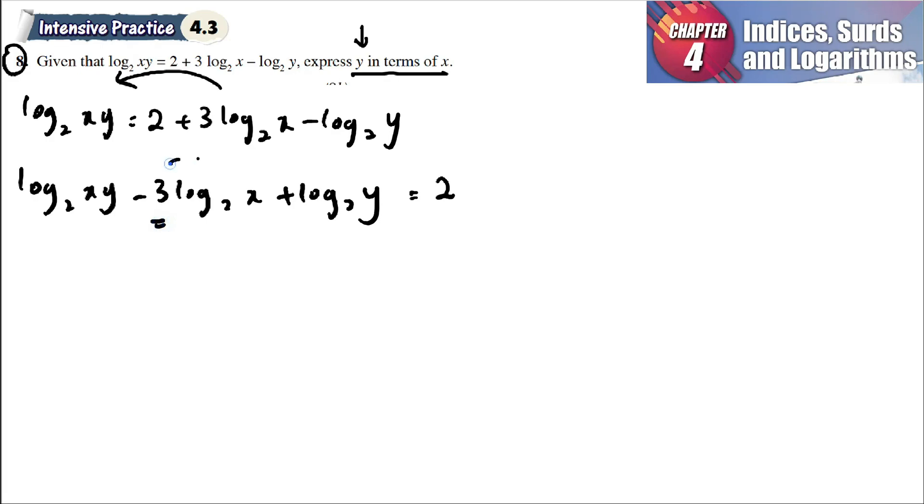We want to combine log base 2, we must make sure that there's no number in front of it. We bring backward and become power. Log base 2 of xy minus log base 2 of x, the 3 would be power of 3, plus log base 2 of y is equal to 2.